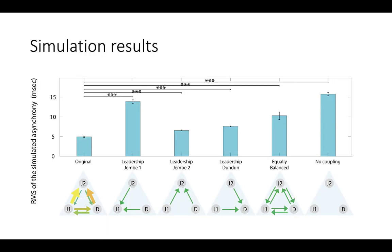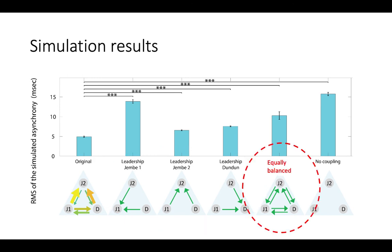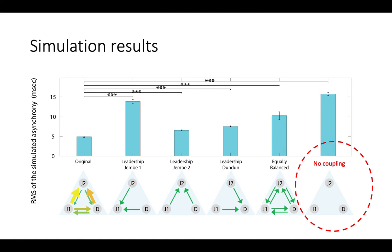To better understand why Malian musicians have this particular pattern, we ran a simulation study where we modified the coupling between the musicians to different patterns while keeping the variability of each musician and the musical texture fixed. We compared the resulting synchronization pattern to the one empirically observed, and measured the overall degree of ensemble asynchrony. We found that having any of the musicians as a single leader, or having equally balanced coupling, results in poorer synchronization compared with the original coupling. As expected, having no coupling — so that each musician aims to play at a metrical location without correcting for the other ensemble members — results in the poorest synchronization.